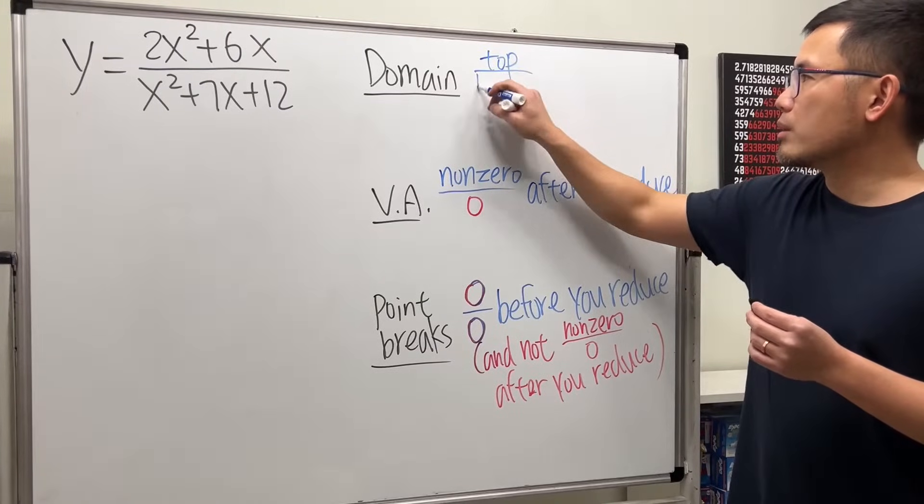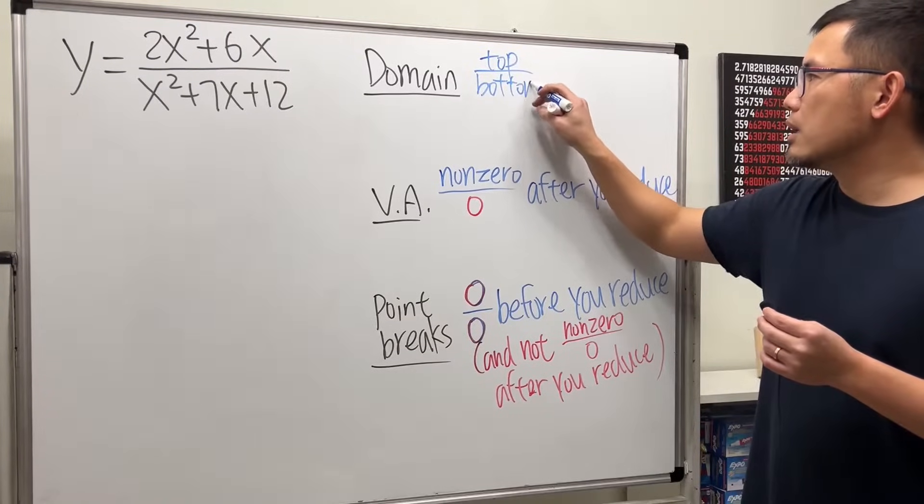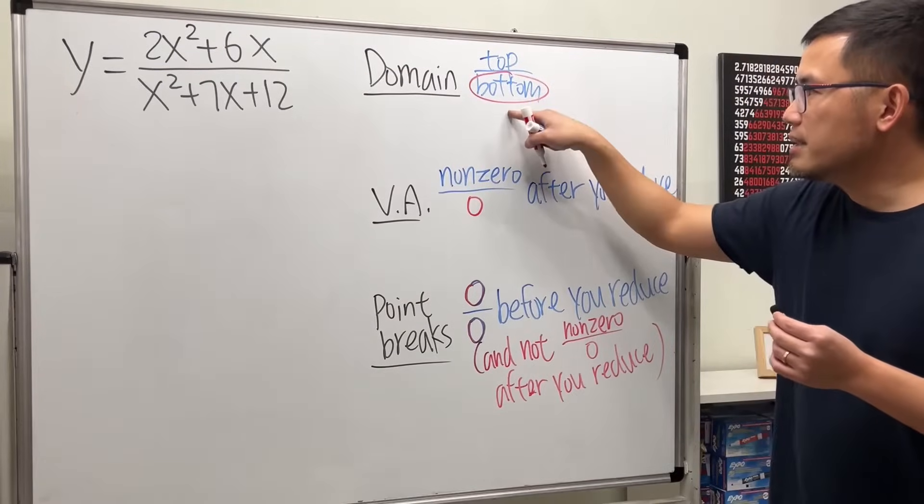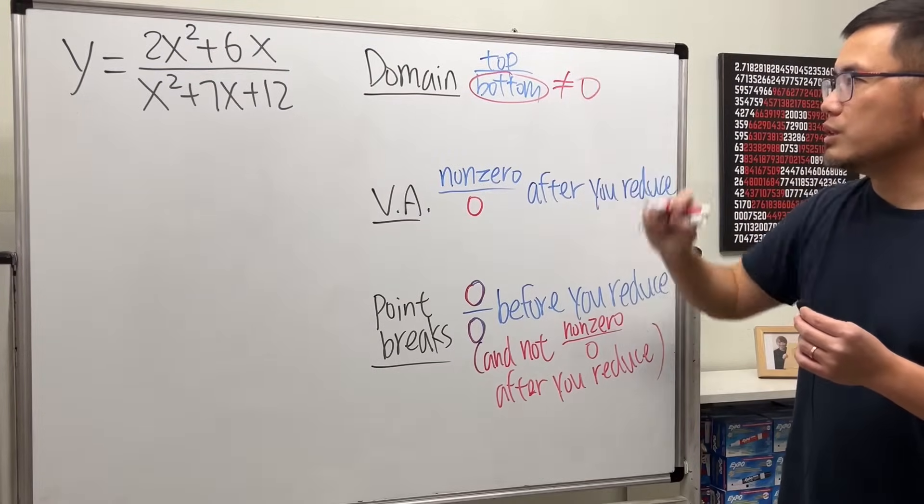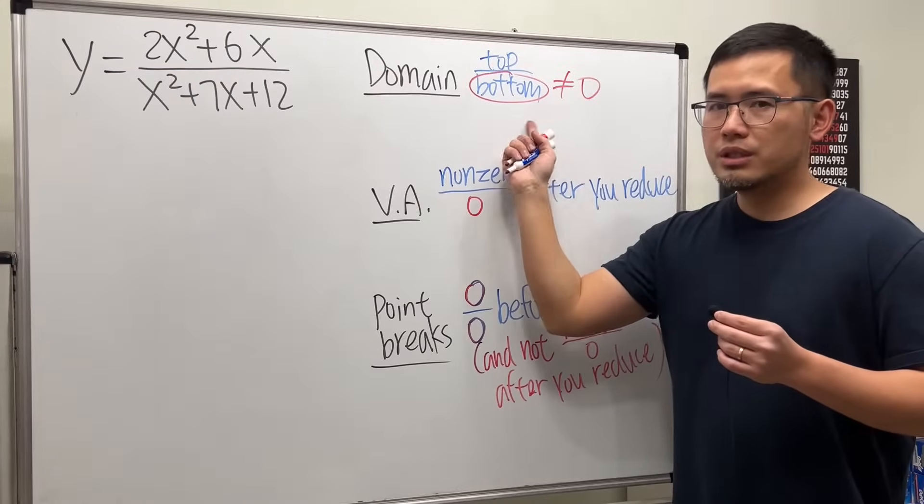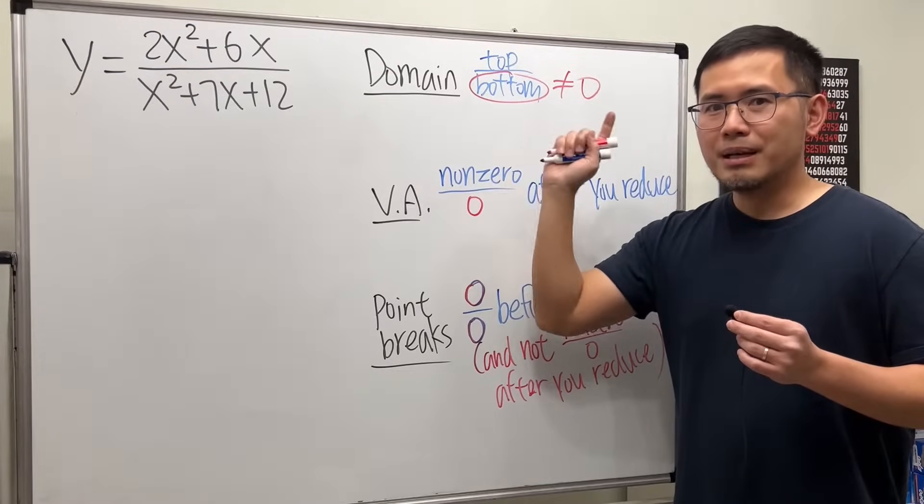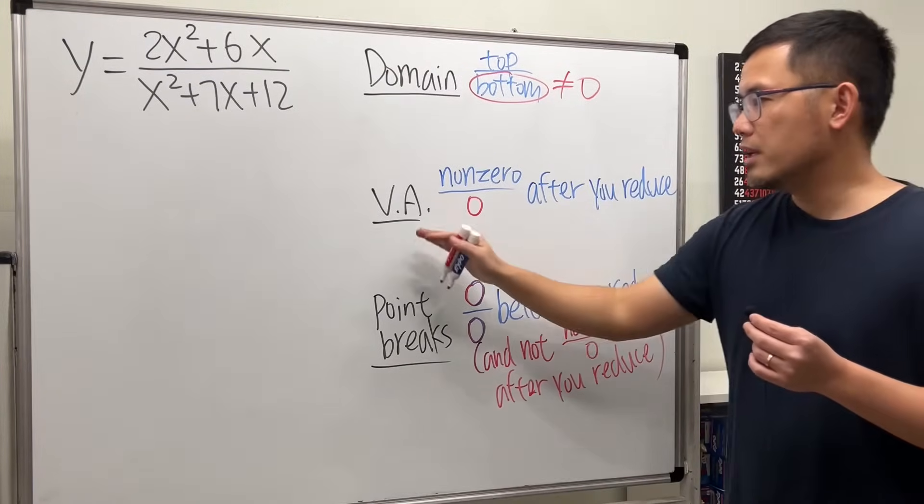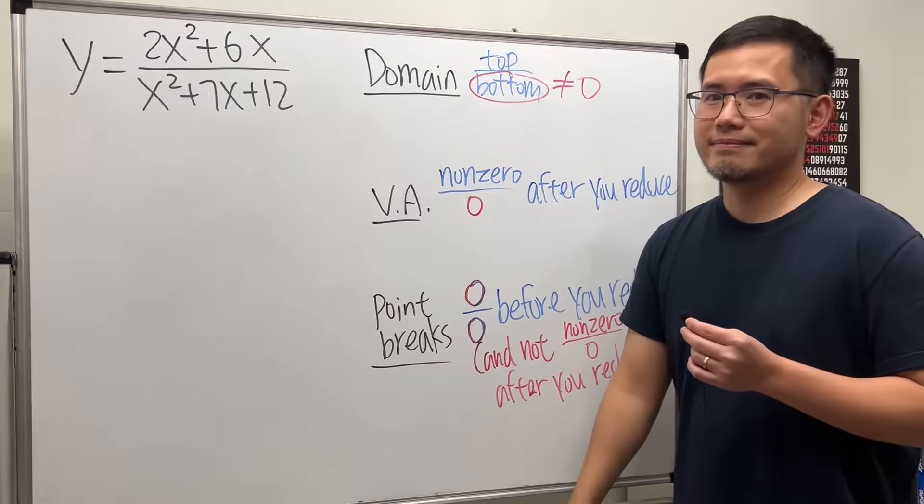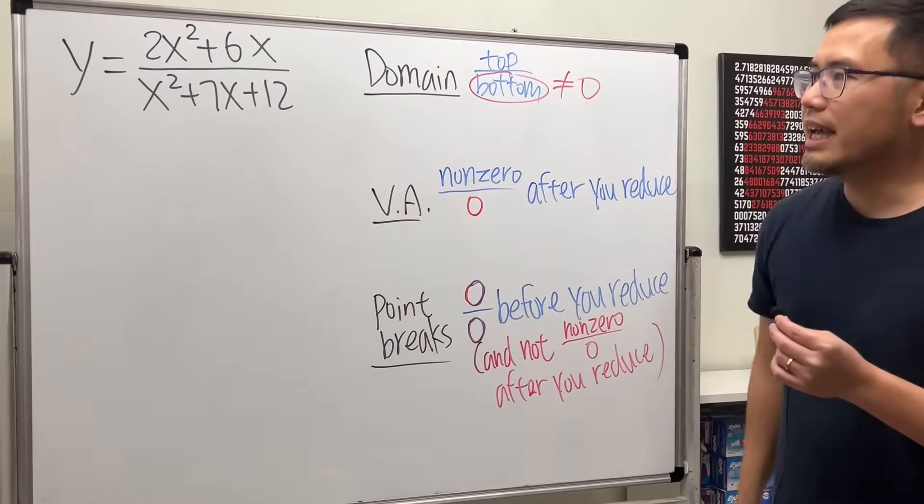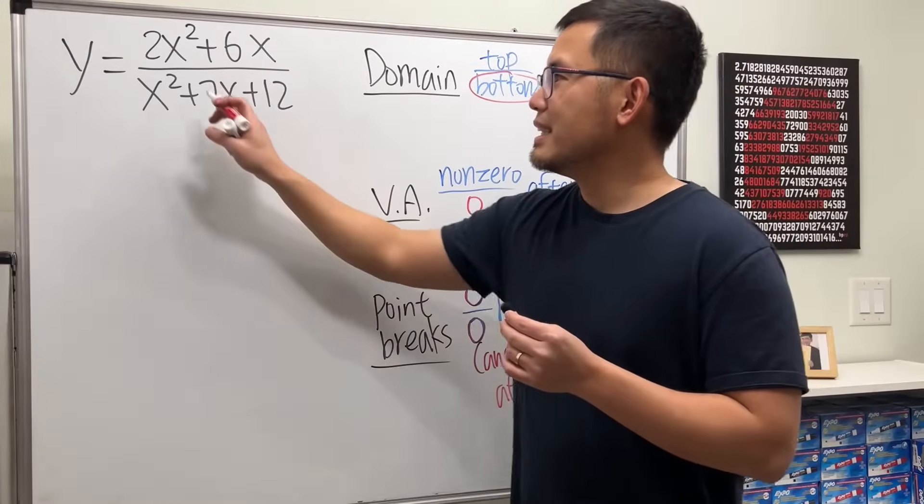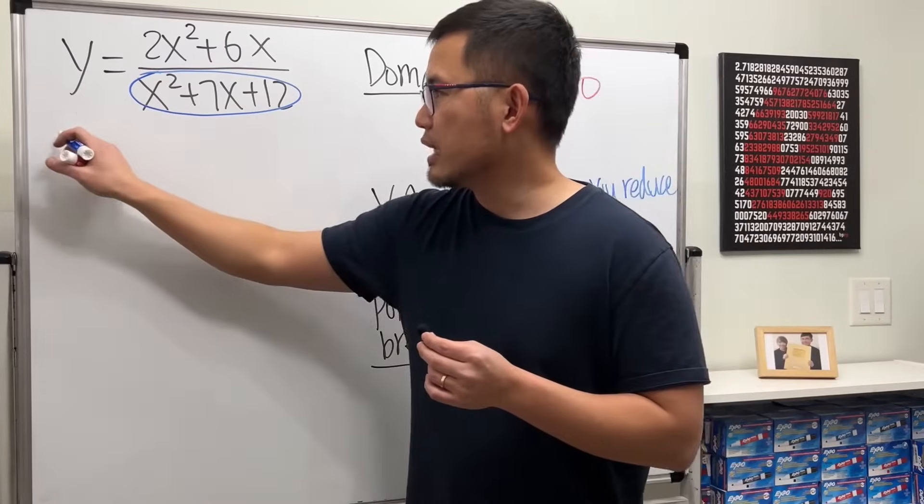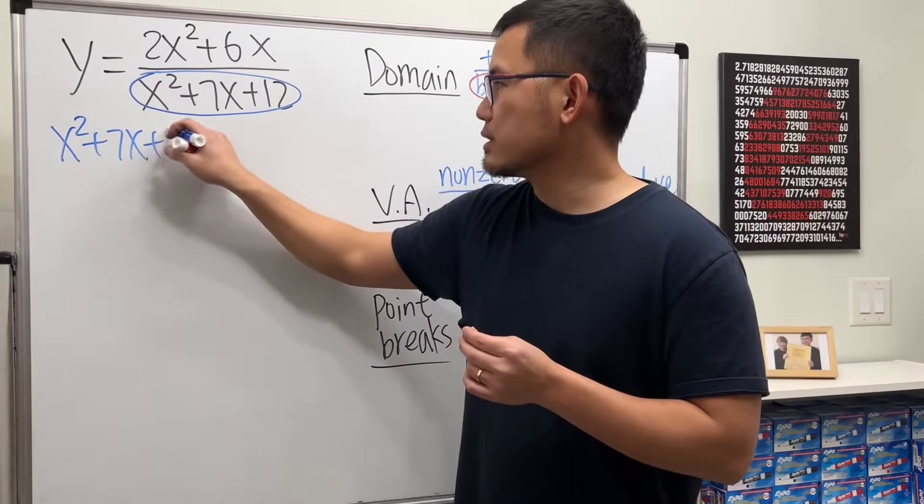We have a top over bottom expression. For domain, go ahead, look at the original, set the bottom not equal to zero. And in fact, you should do this first all the time. Because the numbers that you get right here are the candidates for being vertical asymptotes or point breaks. So let's go ahead and just start with that. Look at the original denominator and set it not equal to zero.